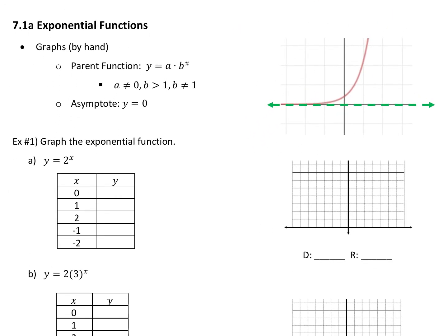When we graph exponential functions by hand, there is this parent function. We've talked about parent functions before — the parent function is the basic function that we start with, and everything kind of branches off of that. When you use this parent function, y equals a times b to the x power, the x is going to be your variable. The other things will have numbers in those places, so a and b will be substituted with other things.